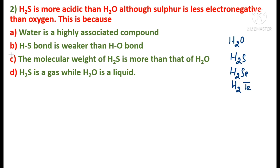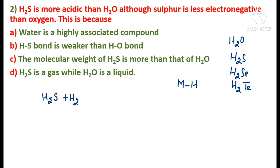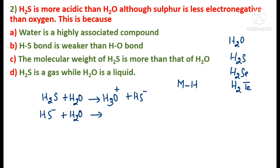The M–H bond present in the hydrides of Group 16 is polar in nature and dissociates in aqueous medium to give free H⁺ ions, which combine with a water molecule to form a hydronium ion. For example, H₂S combines with water, releasing H⁺ ions that form H₃O⁺ and HS⁻. Then HS⁻ again combines with water, furnishing another H⁺ and ultimately giving S²⁻.